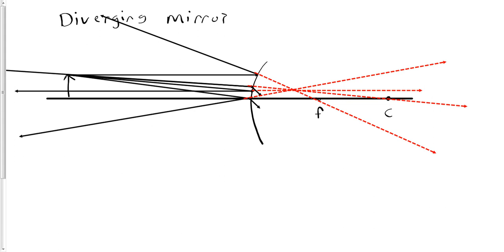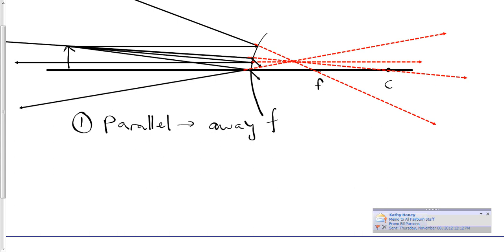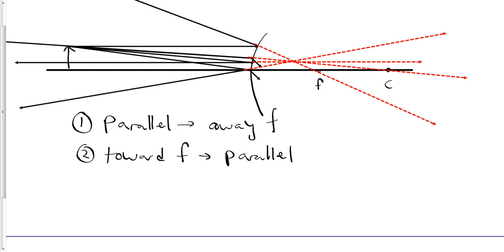The first two for diverging lenses, we can just make a list of these. Parallel away from F. Toward F, parallel. Now it's important to draw the virtual rays on this, because when two virtual rays intersect, you end up with your image over there, which is a virtual image.